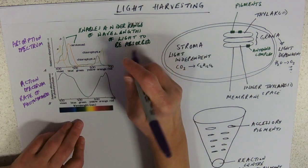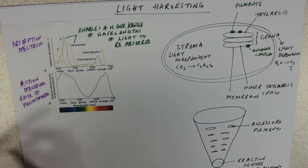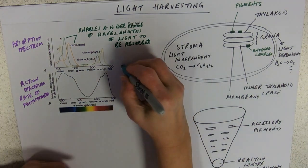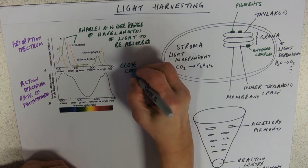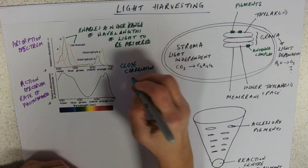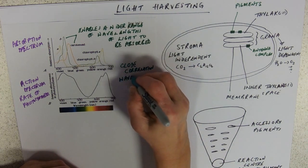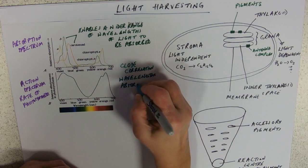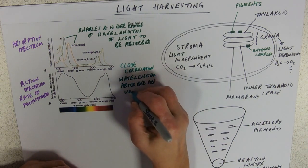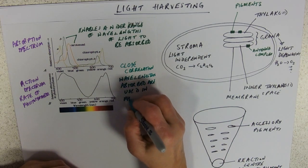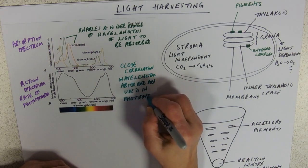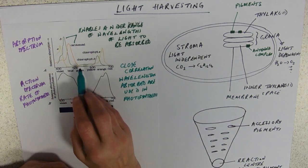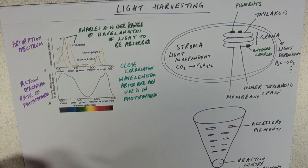This is not accidental. This close correlation—what does that tell us? That the wavelengths absorbed are used in photosynthesis. Of course, they're not absorbing any of this green light; that's all being reflected back into your eyes and making a plant look green. Those wavelengths are not absorbed.